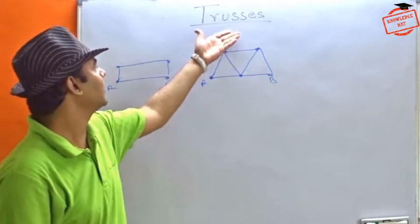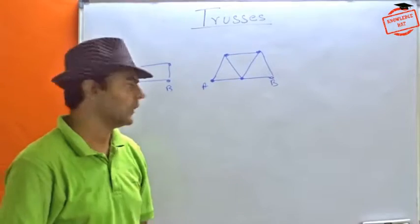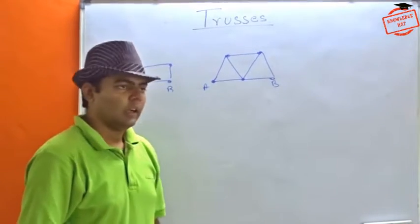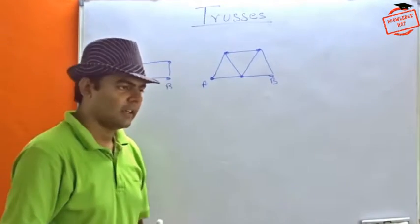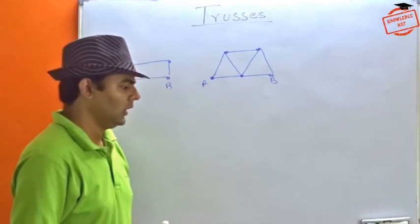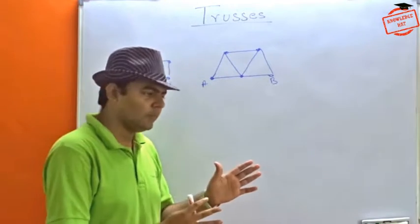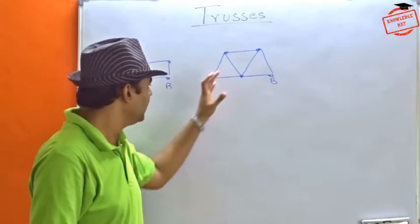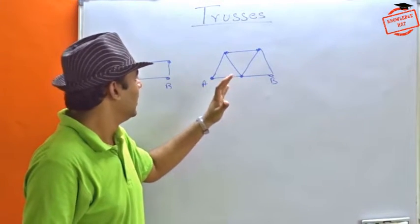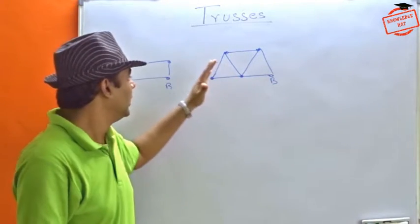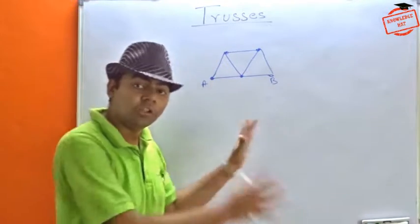Now we have a new chapter, trusses, that we are going to do today. What is a truss? Truss is stationary members or beams that form a truss where they are joined together and there is a load sharing process.